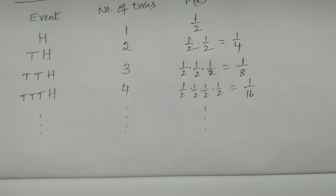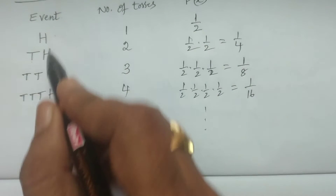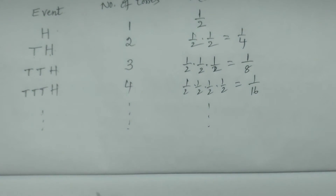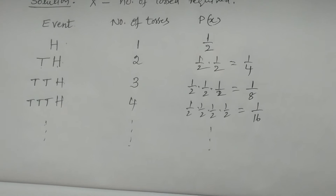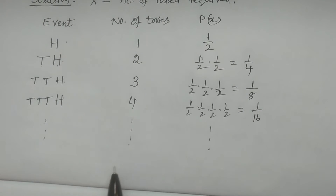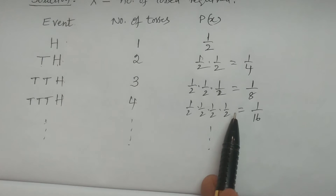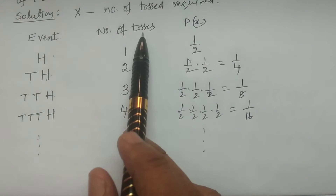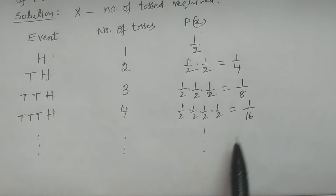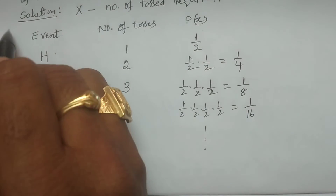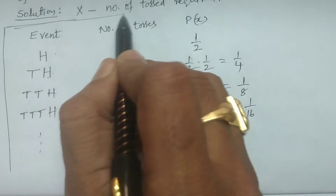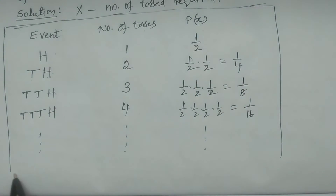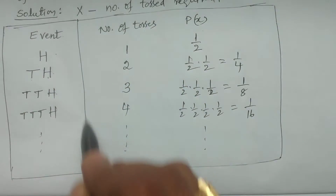The possibilities are up to infinity — we cannot specify when exactly the head will appear; these are all the possible scenarios. I have represented these three particular categories — Event, Number of Tosses, and Probability — in a tabular form. Representing them this way makes it very easy to solve the problem.